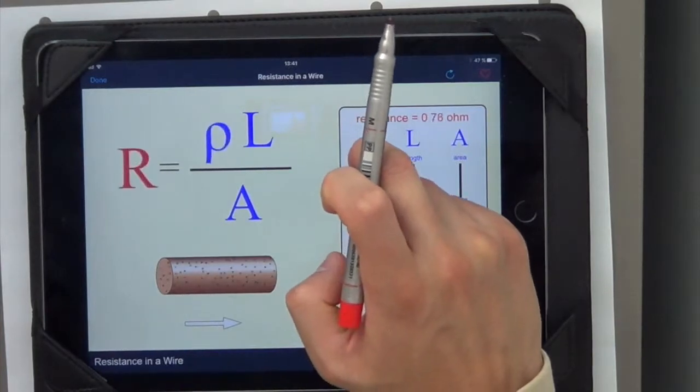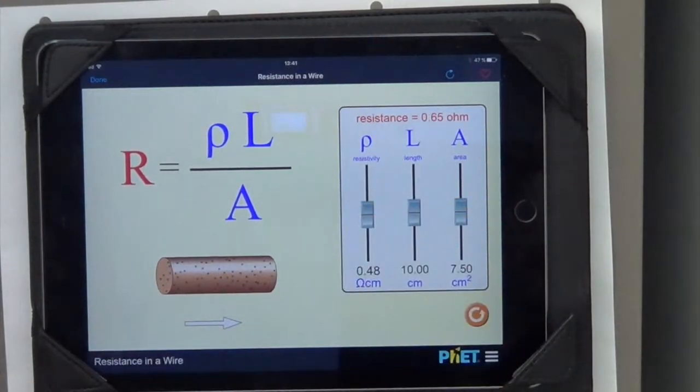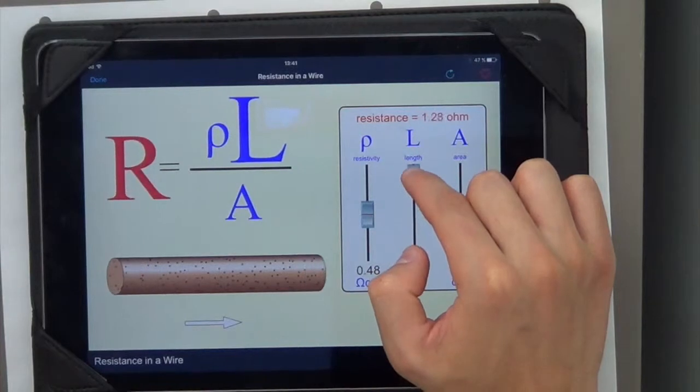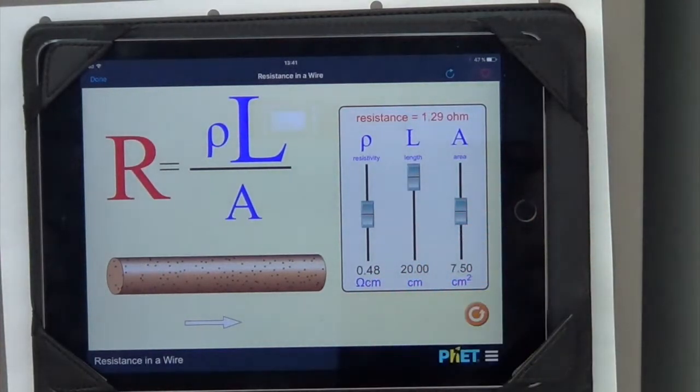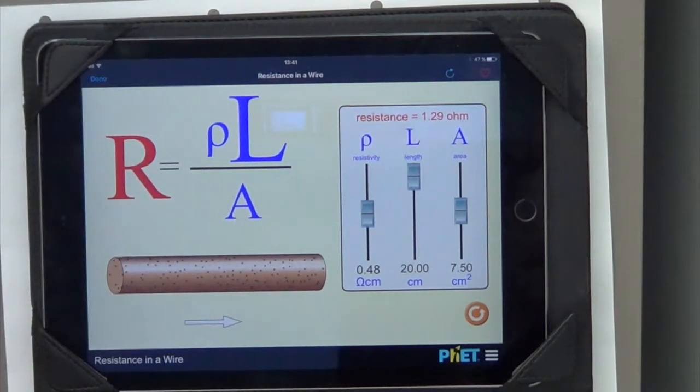So now, if I just bring our material to a normal resistivity level, what happens if I increased its length? Well, if I increase its length, the resistance does increase as well.